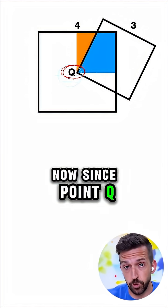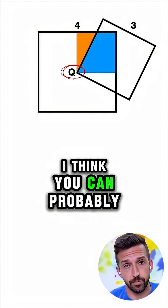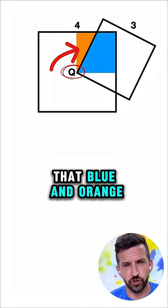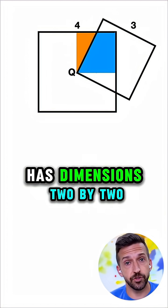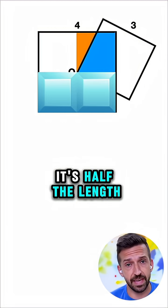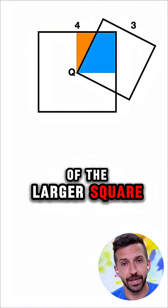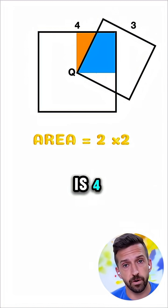Now, since point Q is the center of the square, I think you can probably see that that blue and orange combined square has dimensions 2 by 2. It's half the length and half the width of the larger square, which means the area of that shaded region is 4.